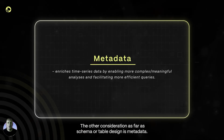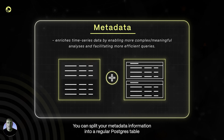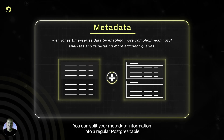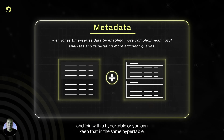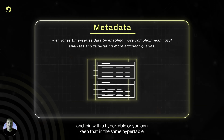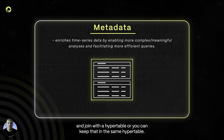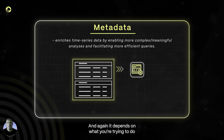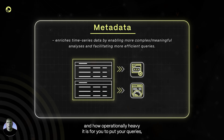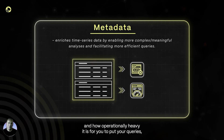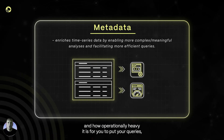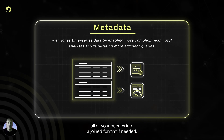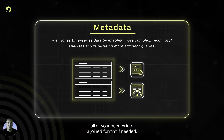The other consideration for schema or table design is metadata. You can split your metadata information into a regular Postgres table and join with a hyper table, or you can keep it in the same hyper table. It depends on what you're trying to do and how operationally heavy it is to put all of your queries into a join format.